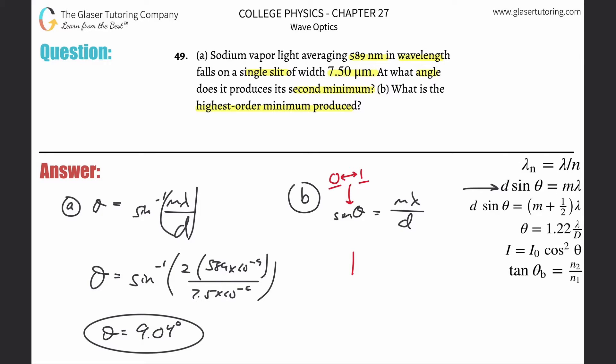I'm going to write a one here, and that's equal to m multiplied by the wavelength, 589 times 10 to the minus 9th meters, divided by the width of the slit, 7.5 times 10 to the minus 6th meters. This whole side has to be less than or equal to one, meaning one has to be greater than or equal to this expression. We can reorder this.